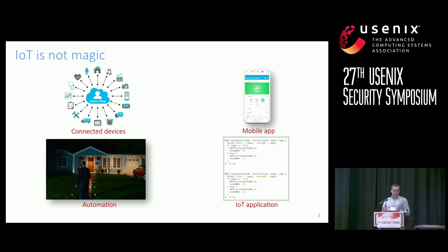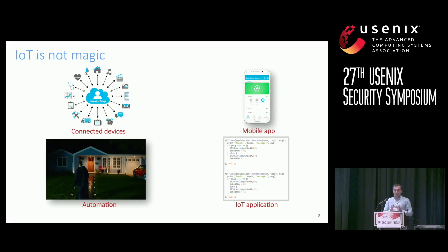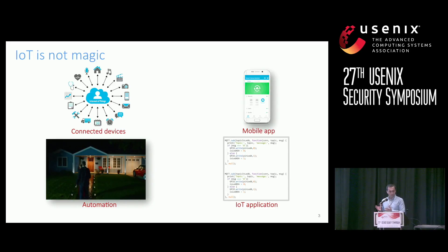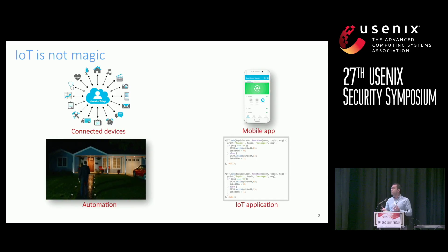IoT is not magic. Just like any other computing system, IoT has a structured architecture. In this architecture, devices have capabilities that are composed of events and actions. Events are the things that a device can sense, and actions represent what a device can do. Devices are connected to an edge device which controls the communication between devices, the cloud backend, and mobile application. Mobile applications are used to configure and add new devices, as well as install new IoT applications.